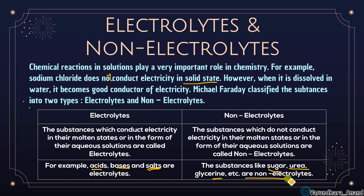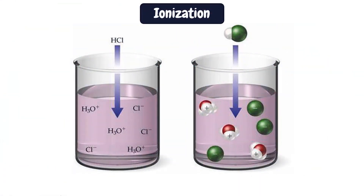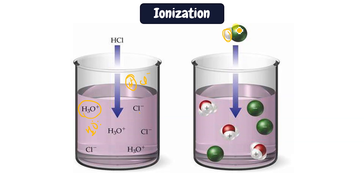Examples of electrolytes include any acid, base, or salt — such as NaCl, MgCl2. Non-electrolytes include carbon compounds like sugar, urea, and glycerine. When HCl dissolves in water, it forms H3O⁺ and Cl⁻: HCl breaks into H⁺ and Cl⁻, and the H⁺ attaches to a water molecule (which has a lone pair), forming the hydronium ion H3O⁺, while Cl⁻ remains free.